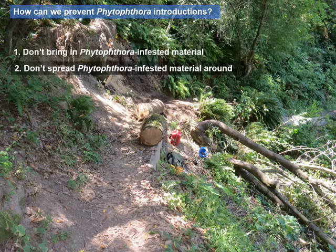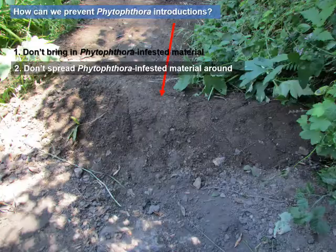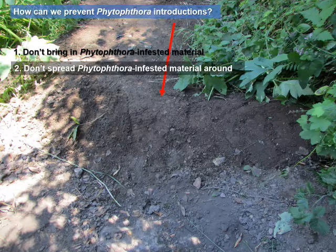Here's an example that may be a little unexpected — a typical trail maintenance situation. A tree failed across the trail, had to be removed and cut up, and the trail was regraded a certain amount. Farther down the trail, we see that the crew decided to use some of this excess soil to make a water bar.